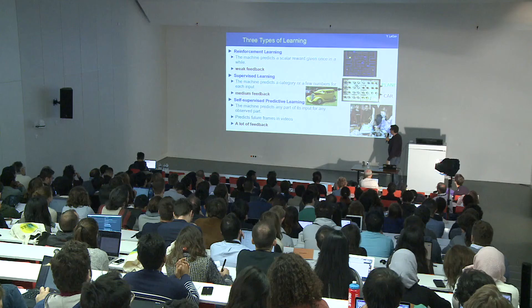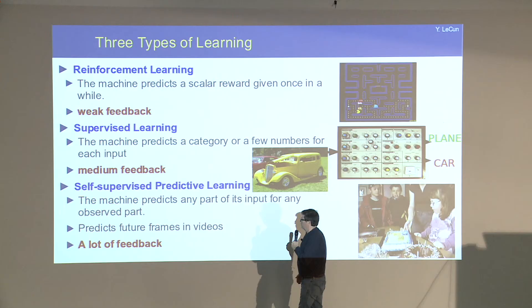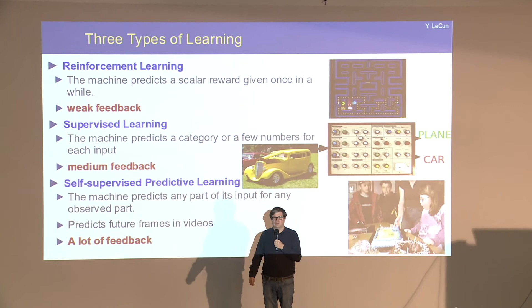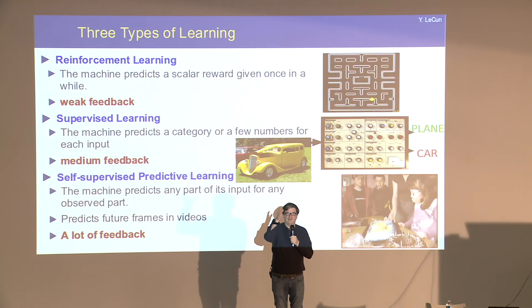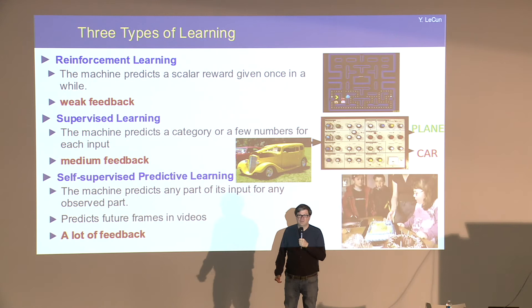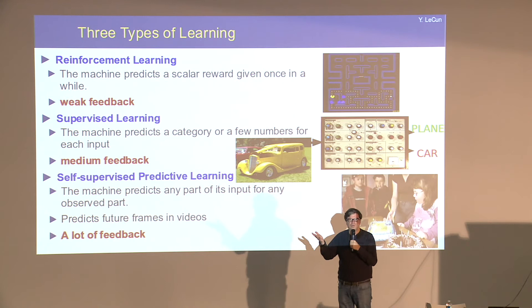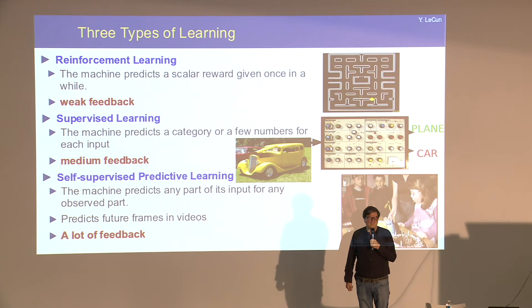In terms of a hierarchy of learning paradigms: in self-supervised learning there's a huge amount of feedback — an entire piece of video with all those pixels to predict. Supervised learning gives a relatively small amount of feedback — telling the machine this is class number three out of a thousand. And reinforcement learning has very weak feedback — just a scalar value once in a while. There's absolutely no way a machine can learn anything complex without enormous numbers of interactions using basic reinforcement learning. Sample complexity theory makes this completely obvious.